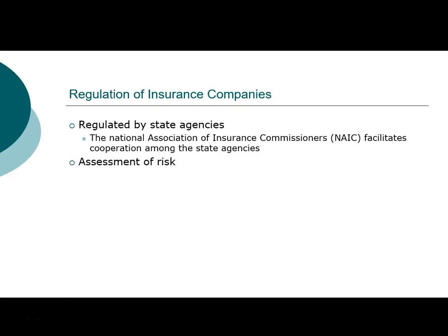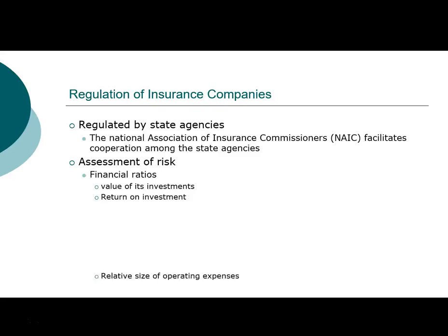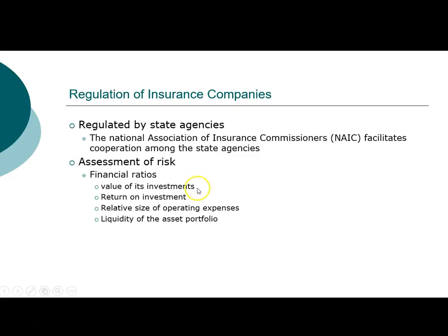The primary job for the state agency is to assess the risk of insurance companies. The tools are relatively basic — they focus on financial ratios covering the value of investments held by the insurance company, return on investments, the relative size of the company's operating budget, and the liquidity of the portfolio. These include market value versus book value, return on investment, expense ratios, and liquidity measurements such as duration and market size of asset holdings.